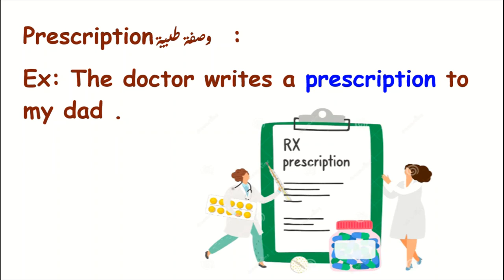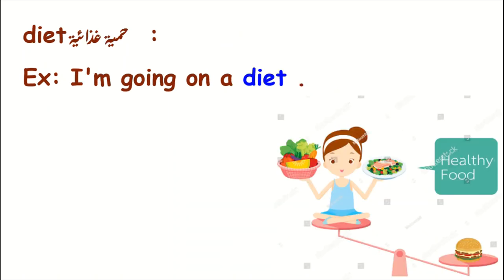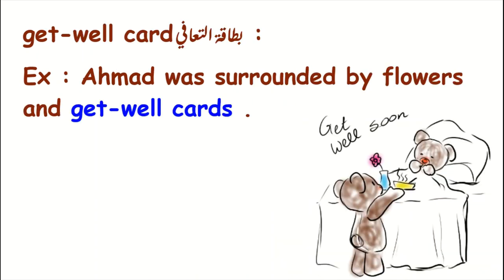The next word is 'diet.' Here, diet means 'himya ghidhaiyya' in Arabic. For example: 'I'm going on a diet.' The next one is 'get well card.' A get well card, in Arabic 'bitaqat al-shifa,' is a card with drawings or words full of hope written for a sick person to encourage their recovery. For example: 'Ahmed was surrounded by flowers and get well cards.'